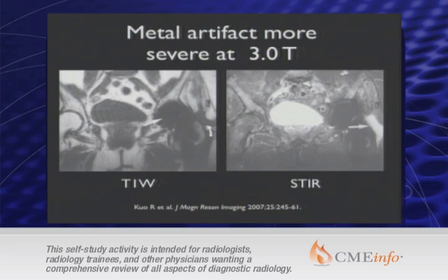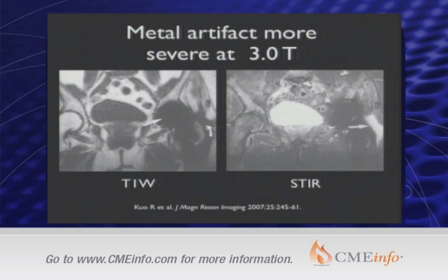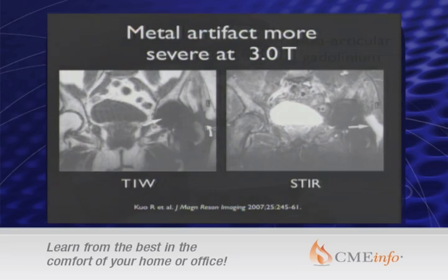Another factor: this kind of artifact is more significant the higher the field strength goes. If you have a choice of magnets — 0.3, 1.5, or 3.0 Tesla — the lower the field strength, the less the artifact.